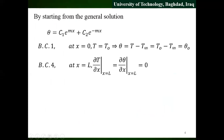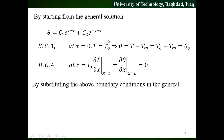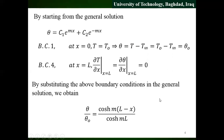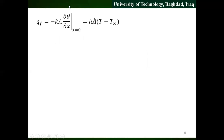The boundary condition at x equals L — from the end, the change in temperature at x equals zero. This is the boundary condition at x equals L. We will manage this. We have the temperature distribution for the fin, then we will go to Q. It says the base temperature at x equals zero is 100. We have to apply the convection boundary condition.